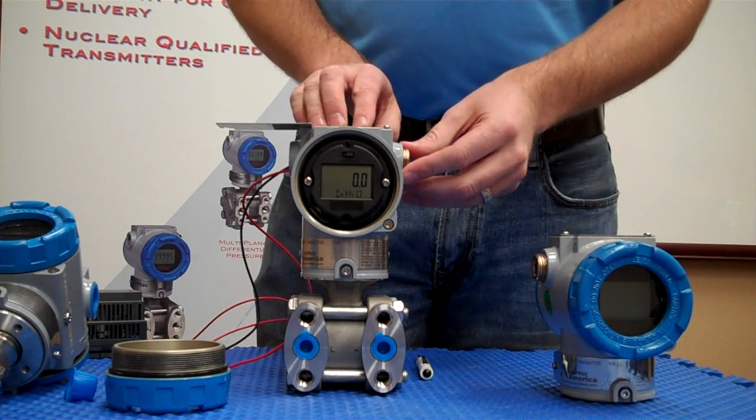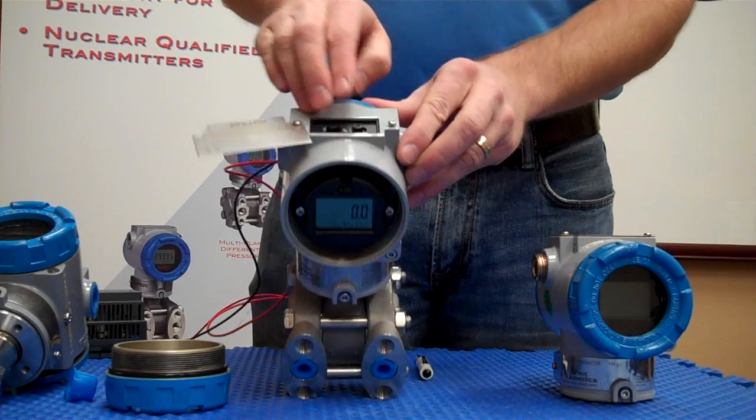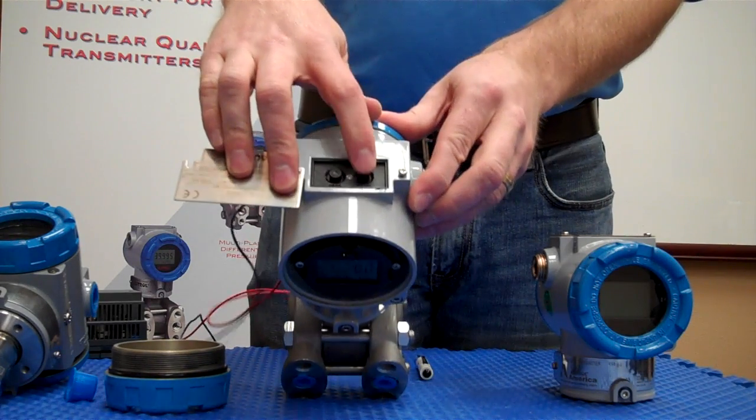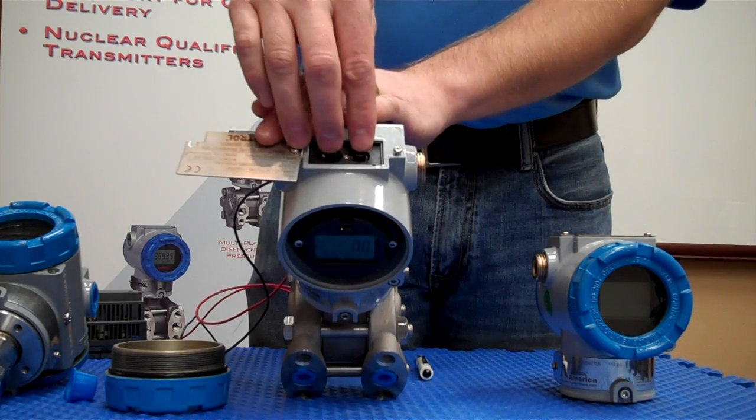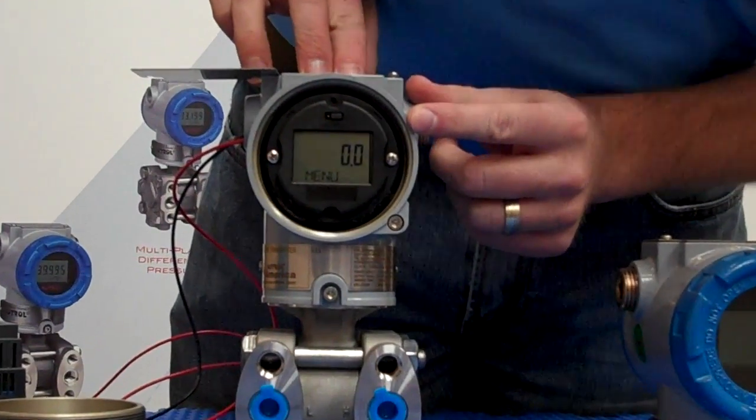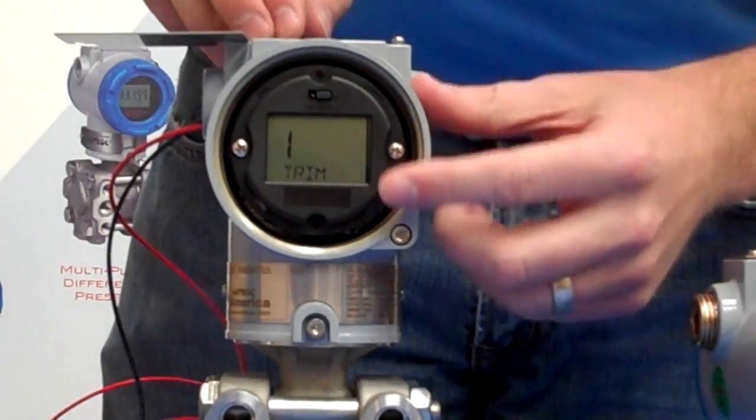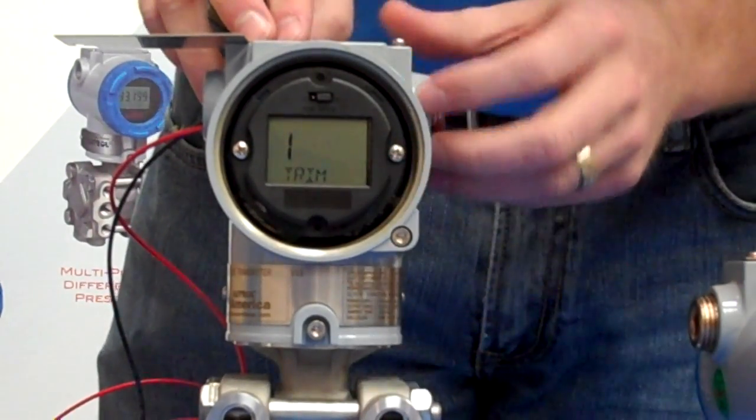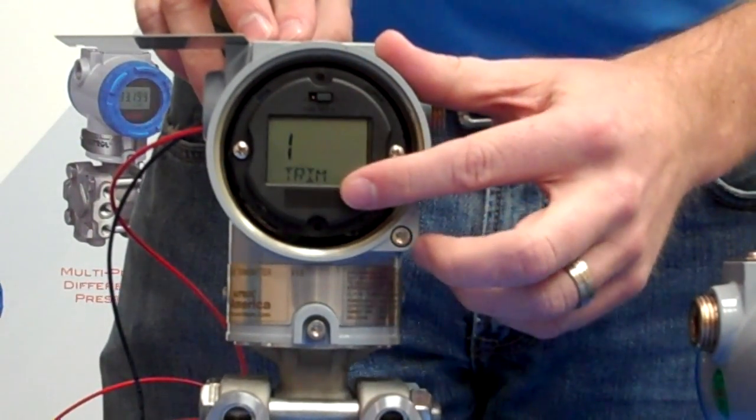First, to access the configuration mode, we push and hold both the zero and the span button at once, wait to see the change where it says menu, and release both of them. This is going to take us to trim, which is the first menu, and it's conveniently labeled.